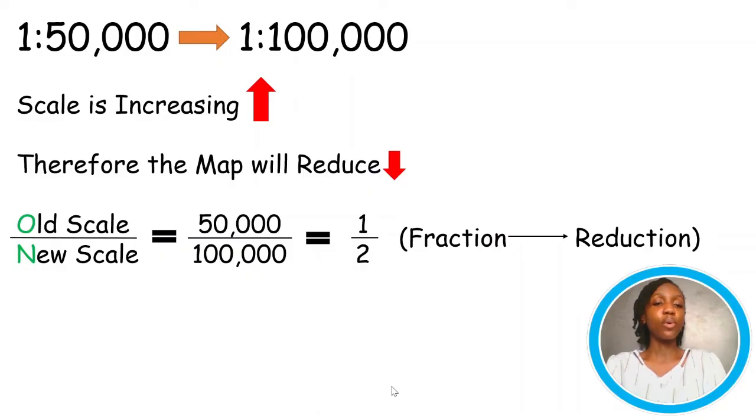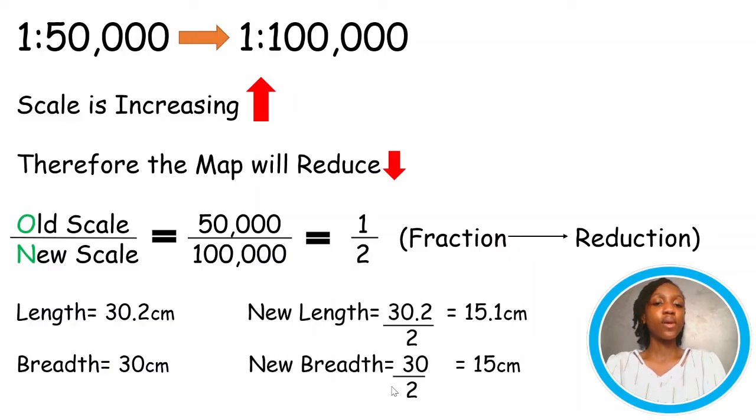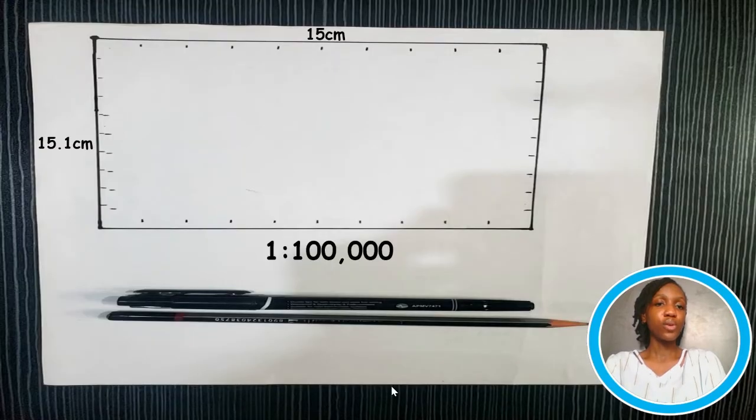So, now that we've gotten the factor and we know what the scale and everything is going to be, now, let's actually do it on the map. So, the length and breadth is 30.2 centimeters by 30 centimeters. And so, our new length and breadth are going to be 15.1 centimeters by 15 centimeters. So, now we can draw our outline for the map. As you can see, this is the outline that I've drawn 15.1 centimeters by 15 centimeters.